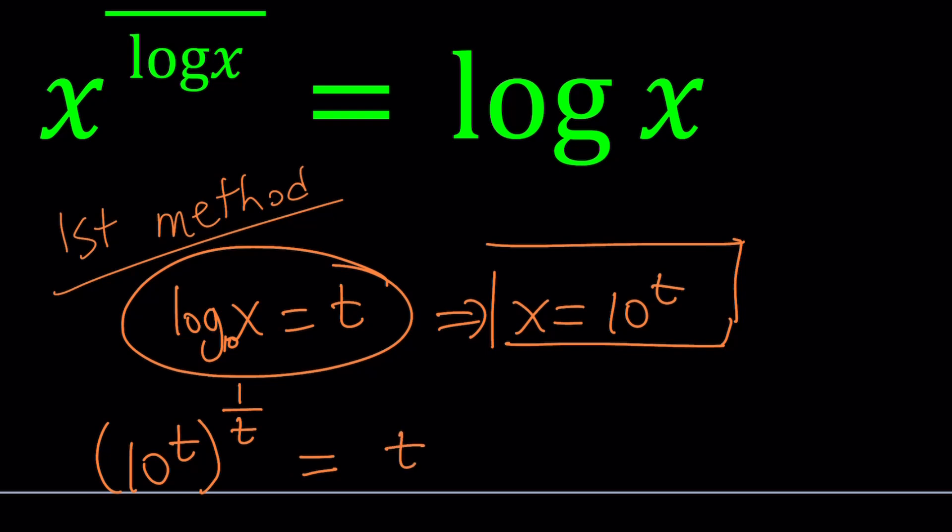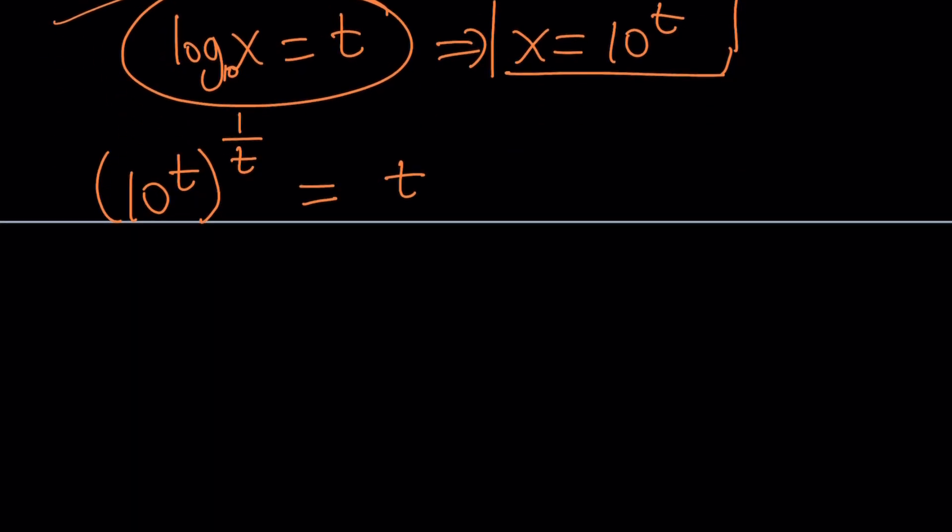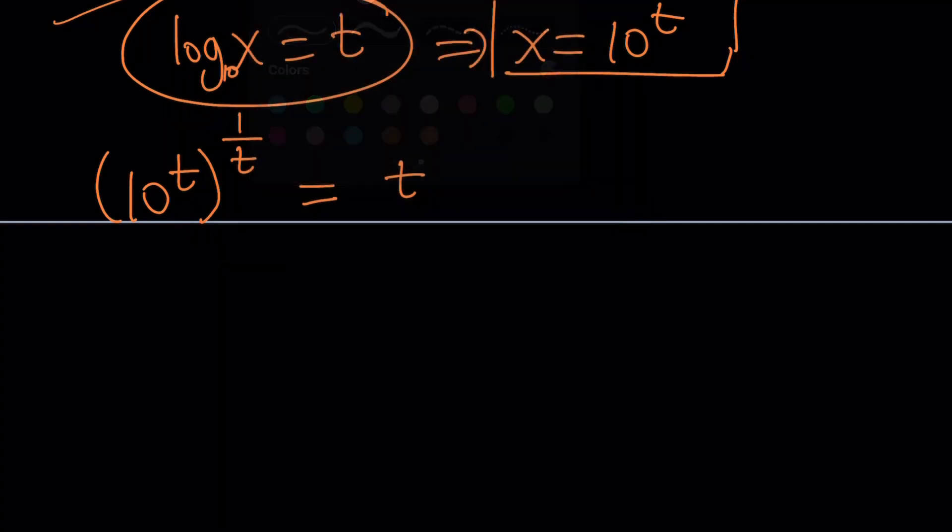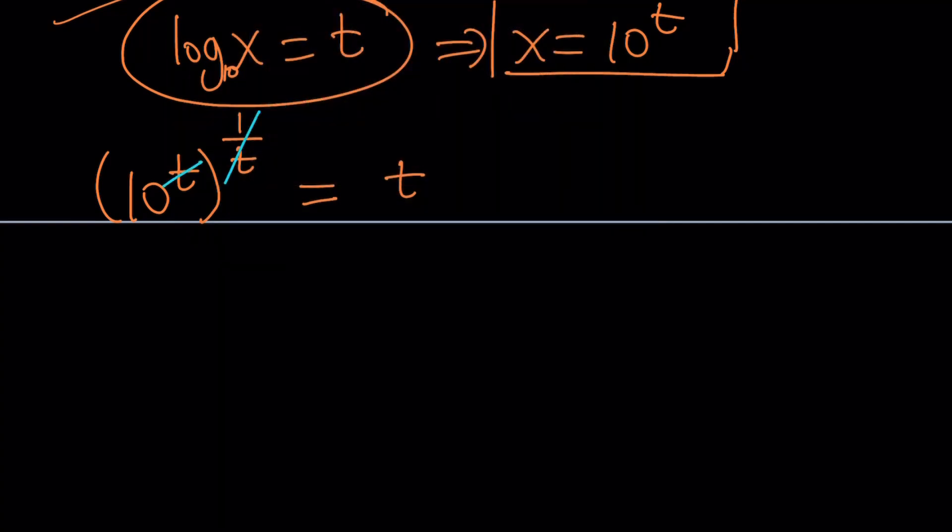So, you get a really simple equation. You got rid of all the logs, and this just turns into an exponential equation, which is going to simplify a great deal. So, what's going to happen next? t and 1 over t cancel out, and we end up with t equals 10. Awesome. It was simple, right?